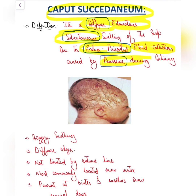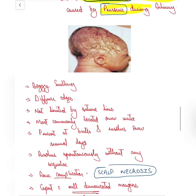To read it once again: it is a diffuse edematous swelling which is subcutaneous — and as it is subcutaneous, it has to be extra-periosteal — caused by fluid collection because of the pressure exerted during delivery. Now if we look at this image...